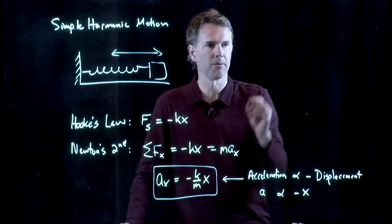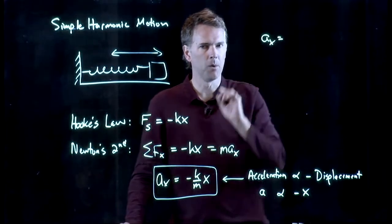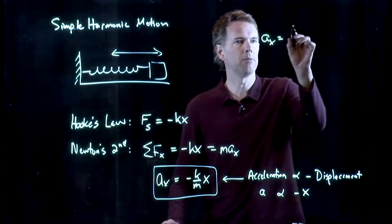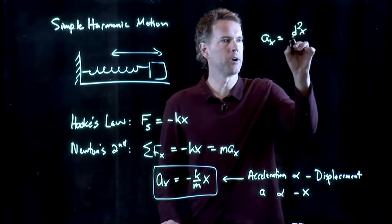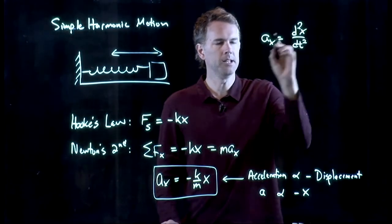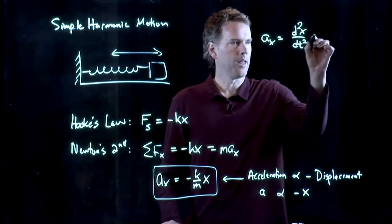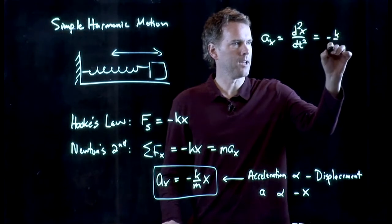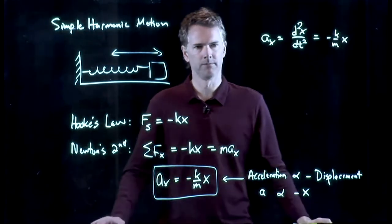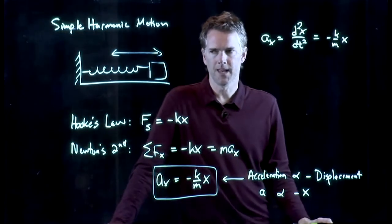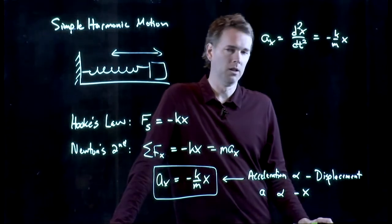All right, let's take a look at this math right here. We have a sub x. But we know what a sub x is. A sub x is d squared x dt squared. And that is negative k over m times x.